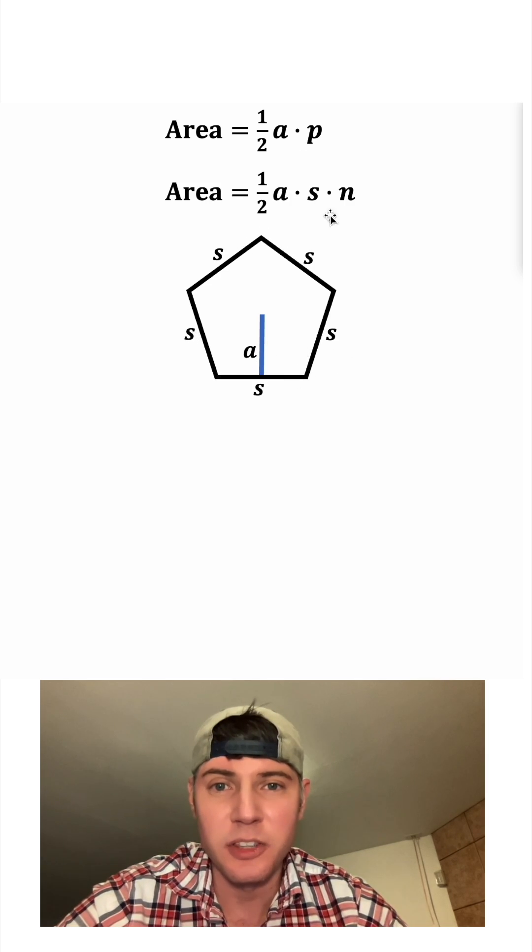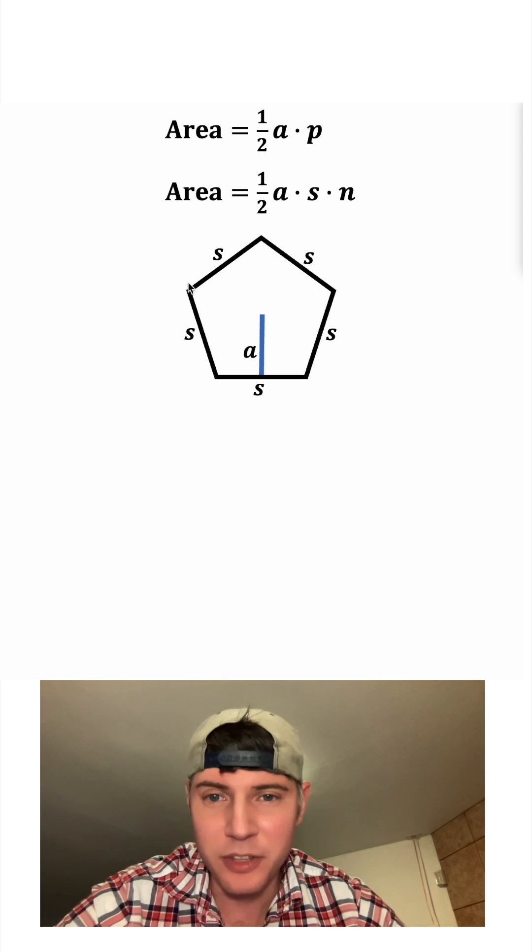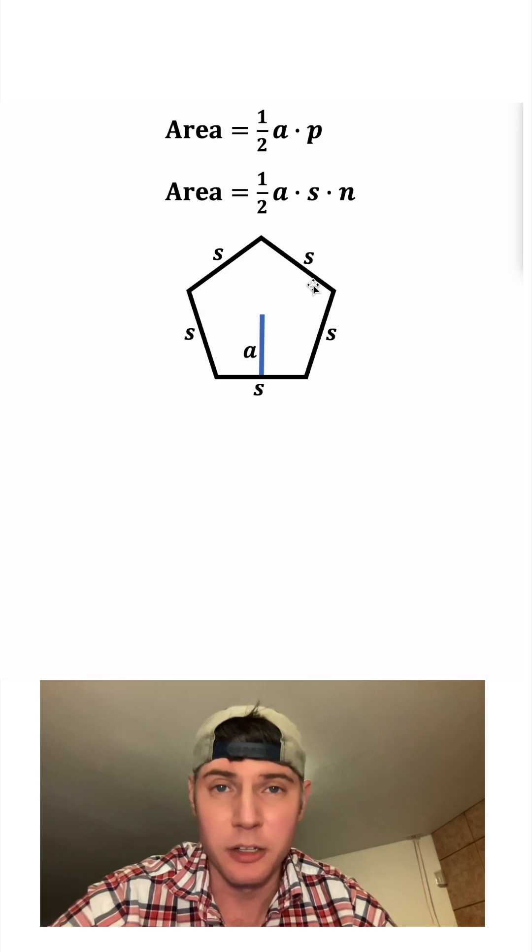So if each side has a length of S, you can think of the perimeter as S times N, where N is the number of sides. And for this figure right here, it's five, but it could be six, seven, eight, nine, 10 for any regular polygon.